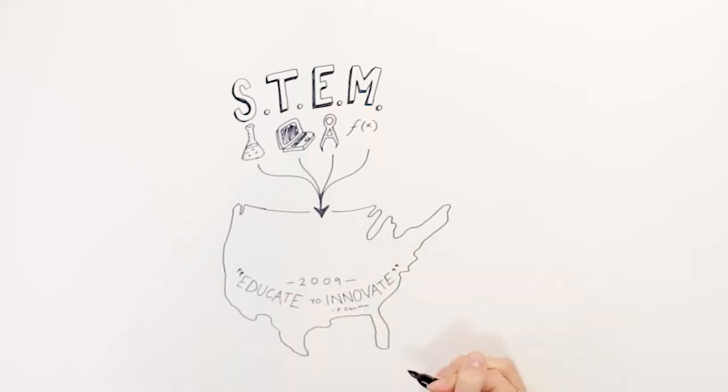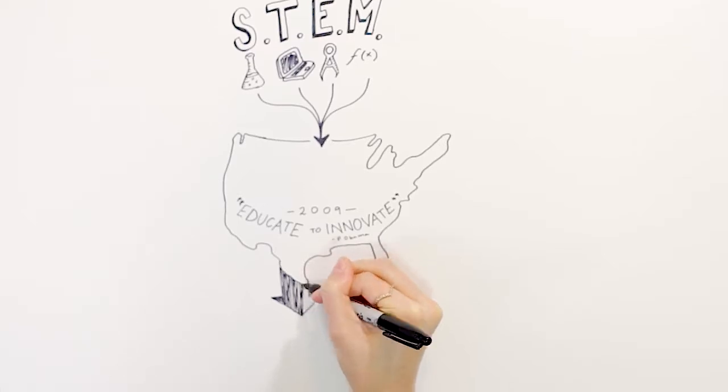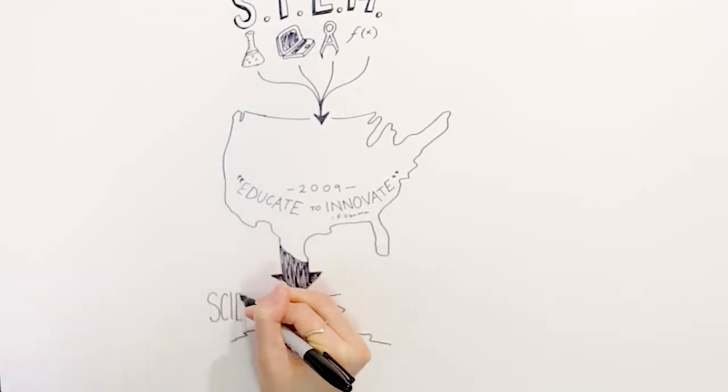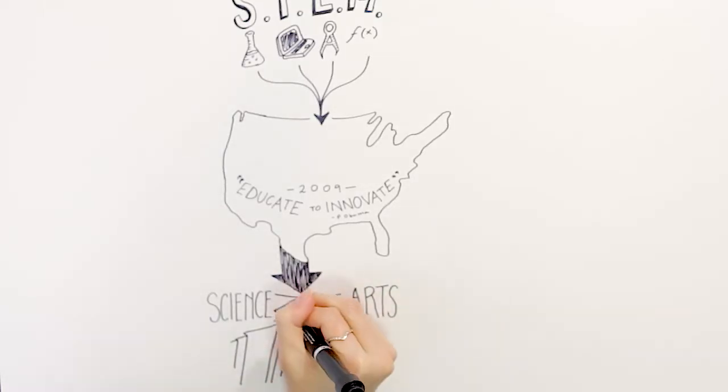However, the shift in educational value to that of the STEM fields has resulted in a major implication for American society. There exists a large barrier in the culture of the United States where the arts have become mutually exclusive to the sciences.